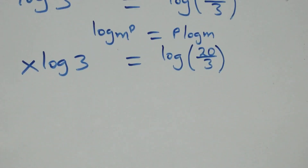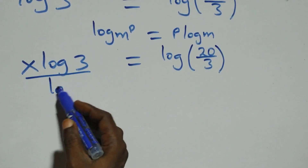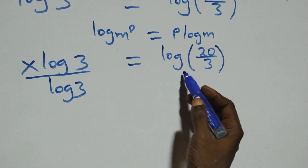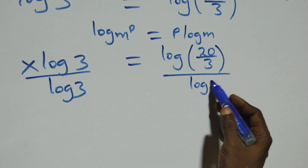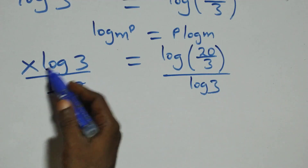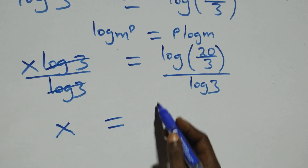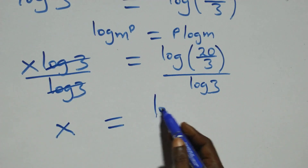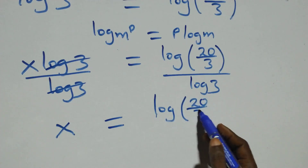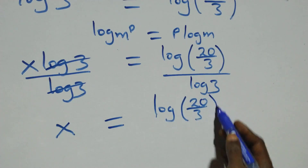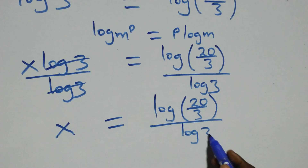The next step: we divide both sides by log 3. The log 3s cancel each other and we have x equals log 20 over 3, divided by log 3.